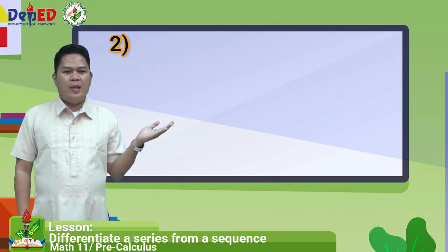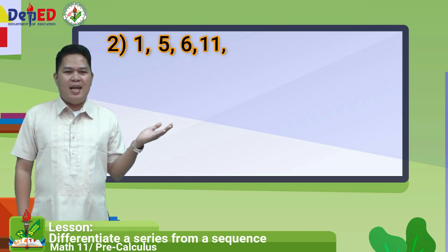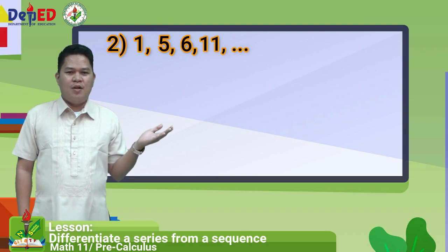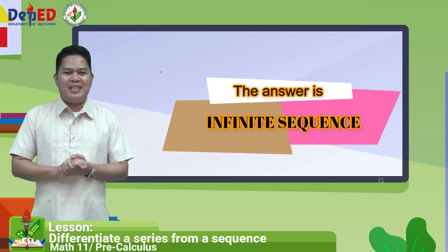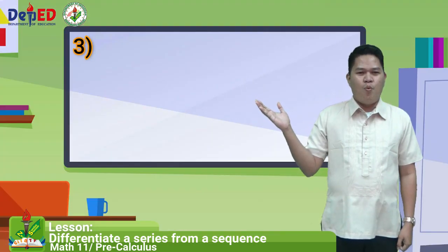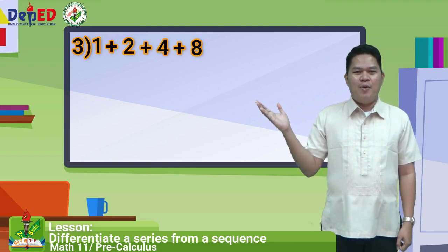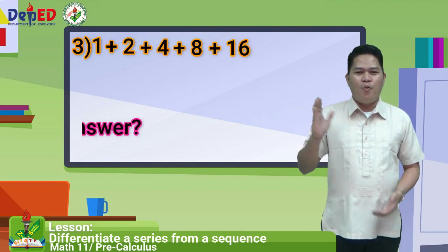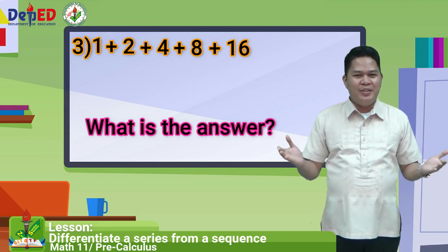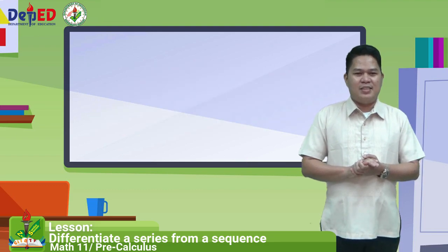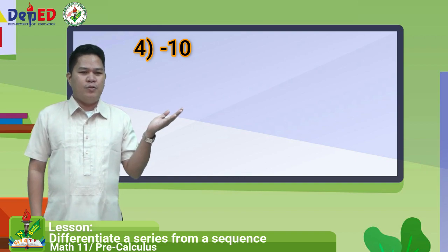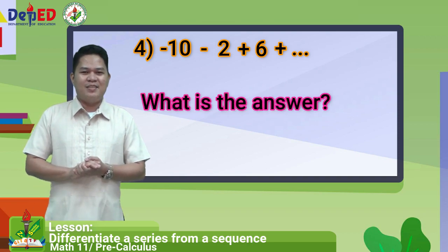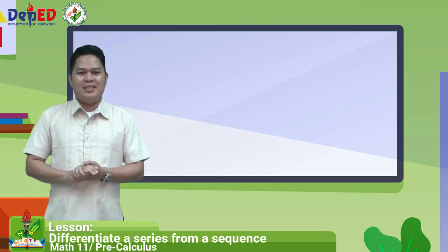Number two: one, five, six, eleven, followed by three dots. The answer is infinite sequence. Number three: one plus two plus four plus eight plus sixteen. The answer is finite series. Number four: negative ten minus two plus six plus, followed by three dots. The answer is infinite series.